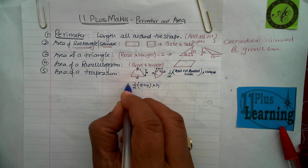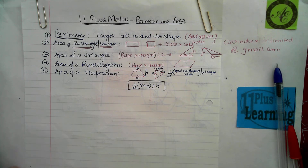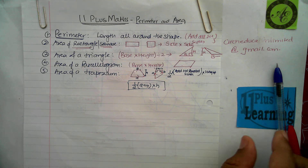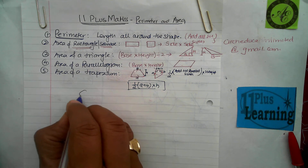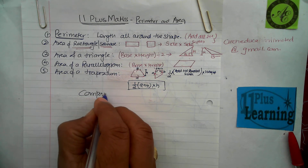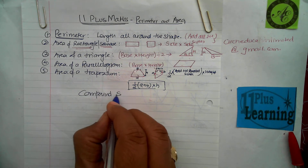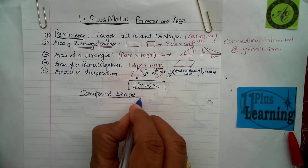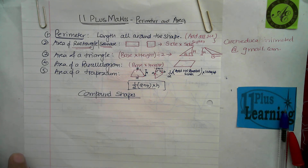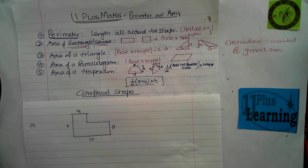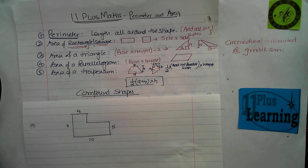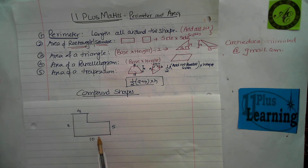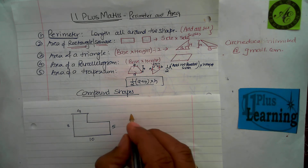Now we move on to the next stage — compound shapes. A compound shape is a shape made up of more than one of these known shapes. We work out the area and perimeter of the compound shape. I'm going to draw a shape for you now. This is the first question — a compound shape — and we're going to find the perimeter and the area of it.